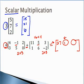Continuing: four times two is eight, plus three is 11 for the first row, third column. Moving to the second row: four times three is 12, plus one gives 13. Four times five is 20, plus six gives 26. And four times zero is zero, plus negative two gives negative two.